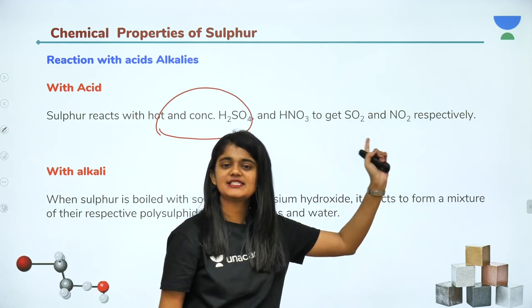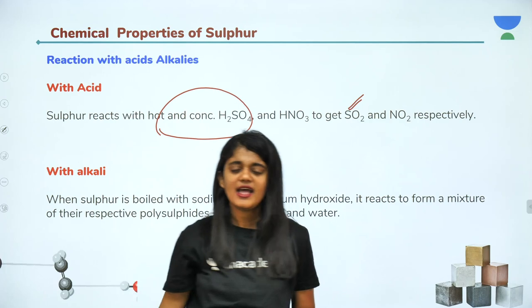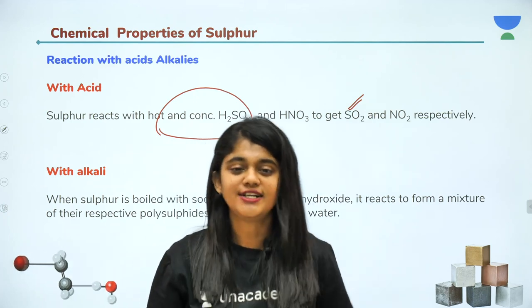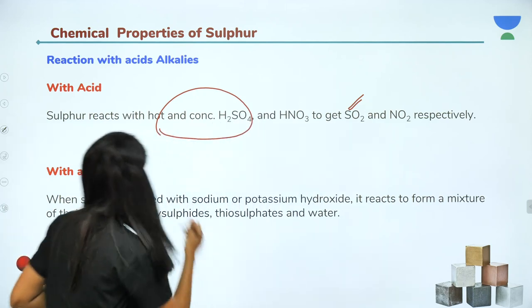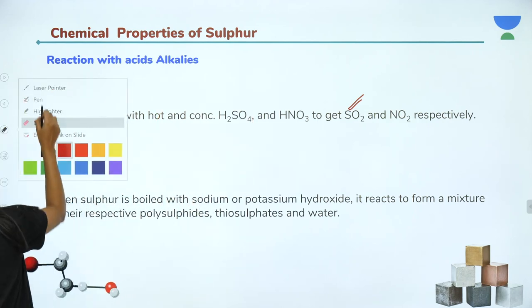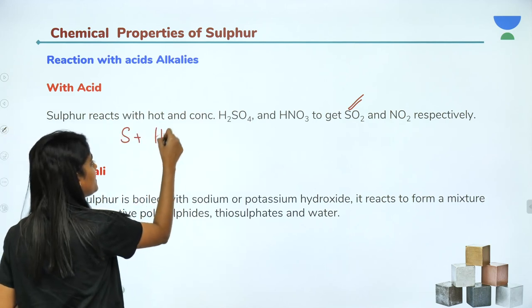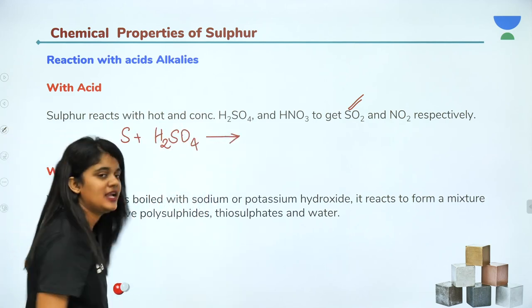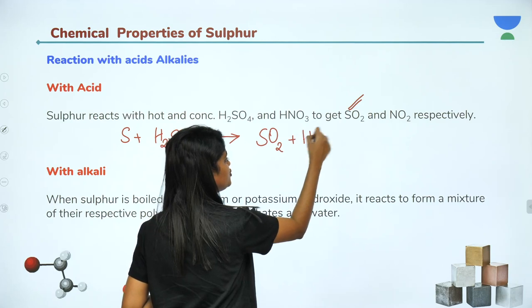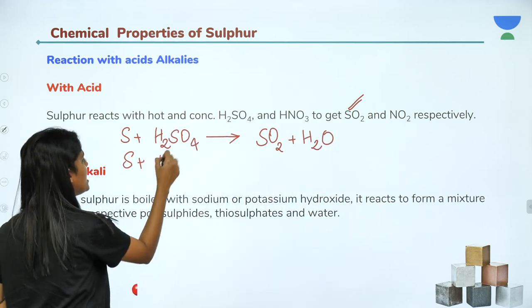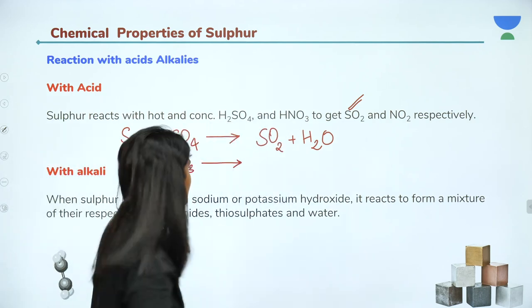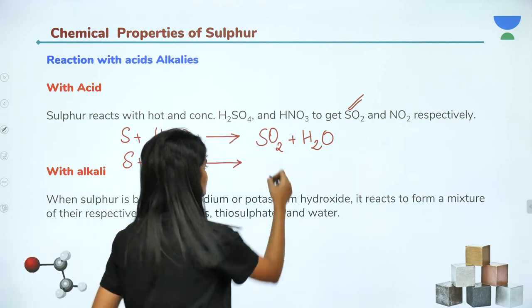For the reaction of sulfur with acids: first, sulfur reacts with concentrated H₂SO₄ to give sulfur dioxide (SO₂). The balanced equation is: S + 2H₂SO₄ → 3SO₂ + 2H₂O. Second, sulfur reacts with concentrated nitric acid (HNO₃). The products are nitrogen dioxide (NO₂), water (H₂O), and sulfuric acid (H₂SO₄).